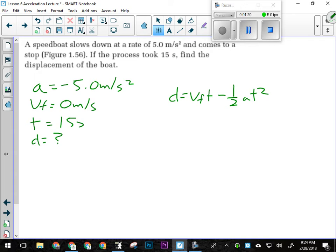If I just go 1/2 AT squared with A negative, I'm going to get a negative number. And that's going to say that by slowing down, even though this boat was moving forward, its displacement was backwards, which won't be the right direction.